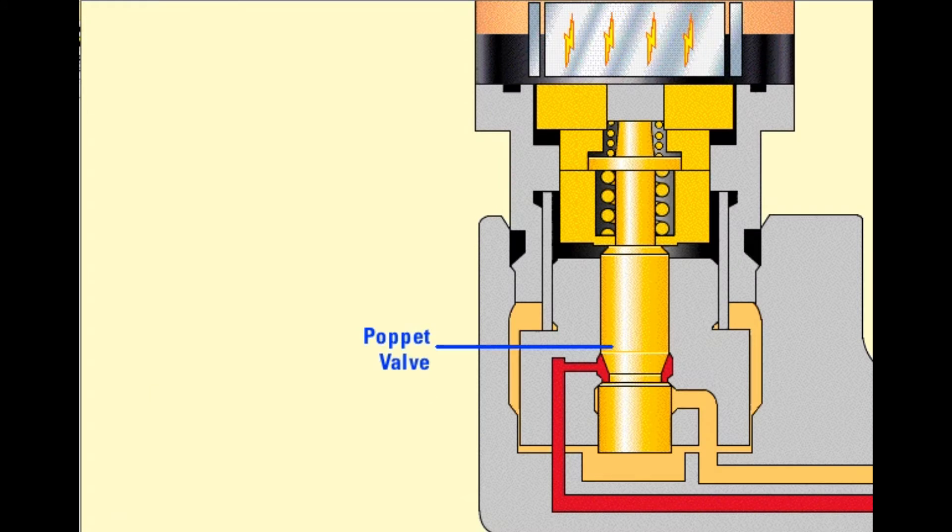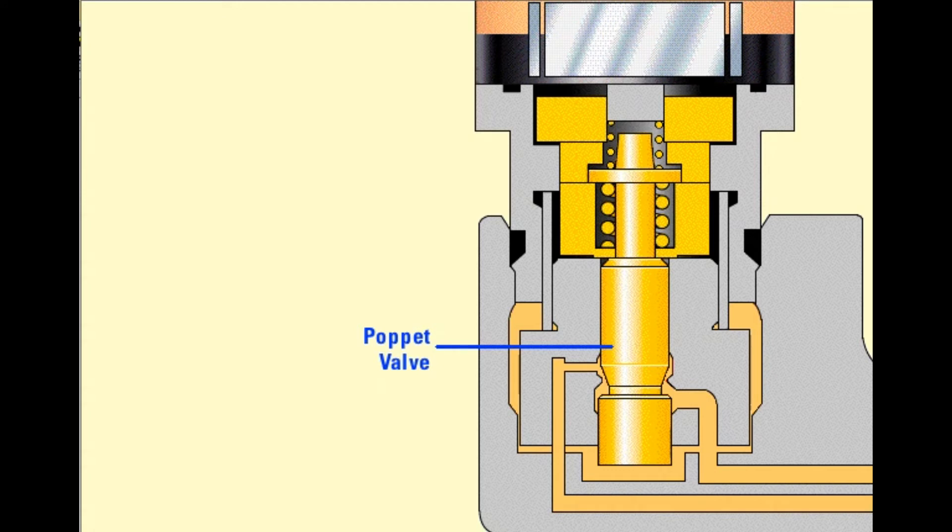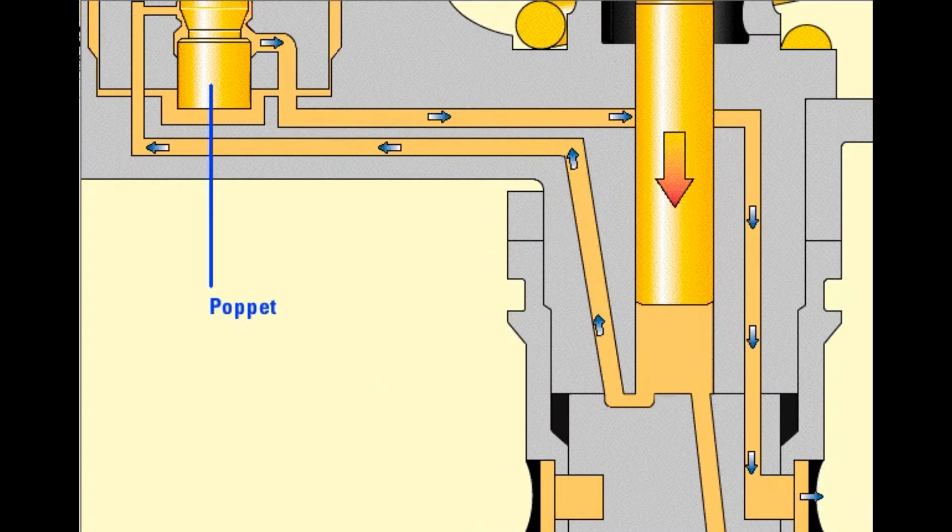When it decides that injection should end, the ECM stops current flow to the solenoid. This collapses the magnetic field holding the poppet closed. Spring and flow forces open the poppet almost instantly. High pressure fuel can now flow around the open poppet and into the fuel supply passage.